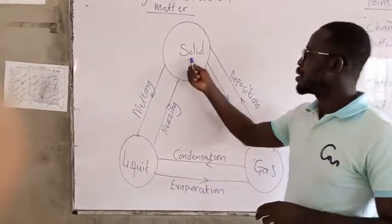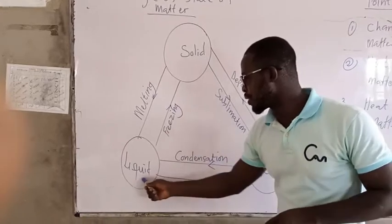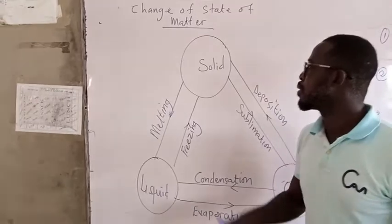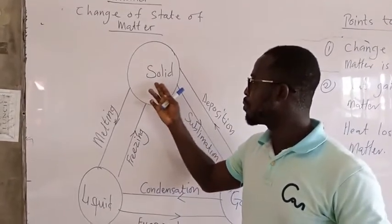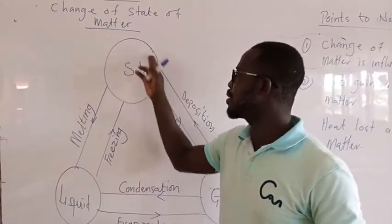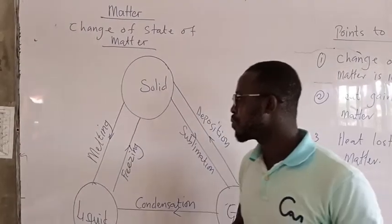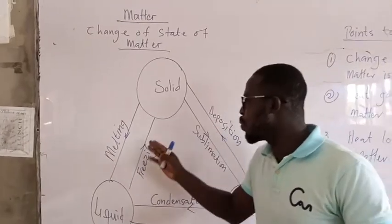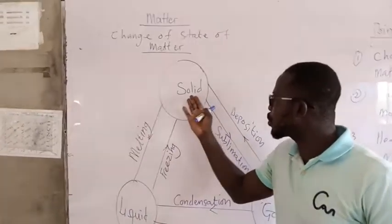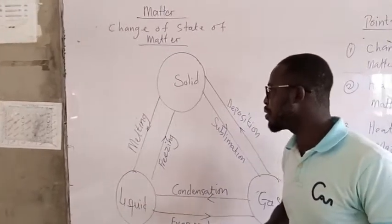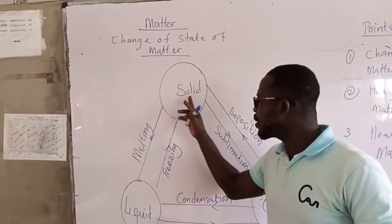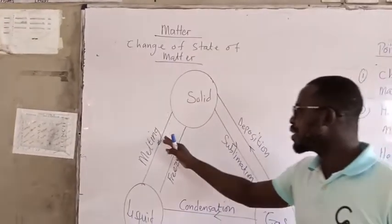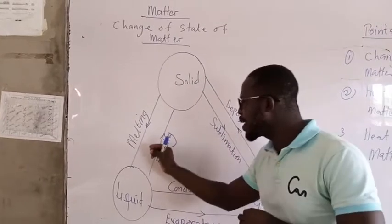Quickly, let's go through. This is our solid substance. This is our liquid substance. And this is our gas. Now, when a solid changes its state into liquid, there is an influence — something that causes it to change from solid state to liquid state. The process of changing from solid state to liquid state is what we call melting.